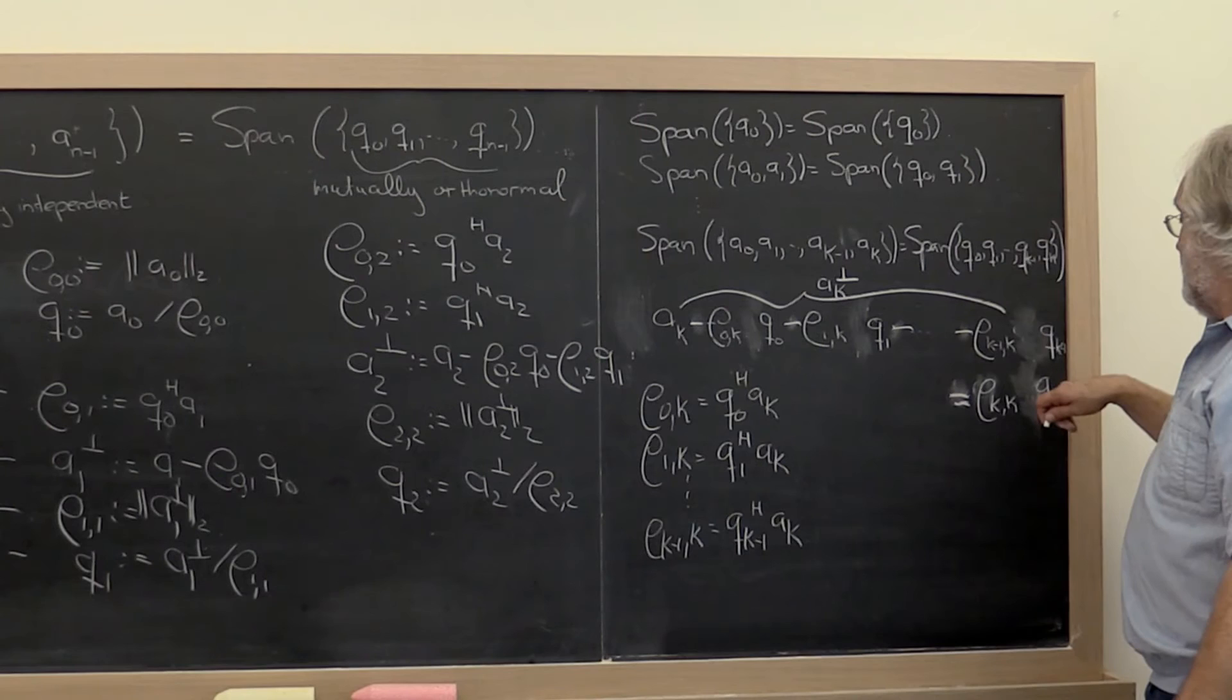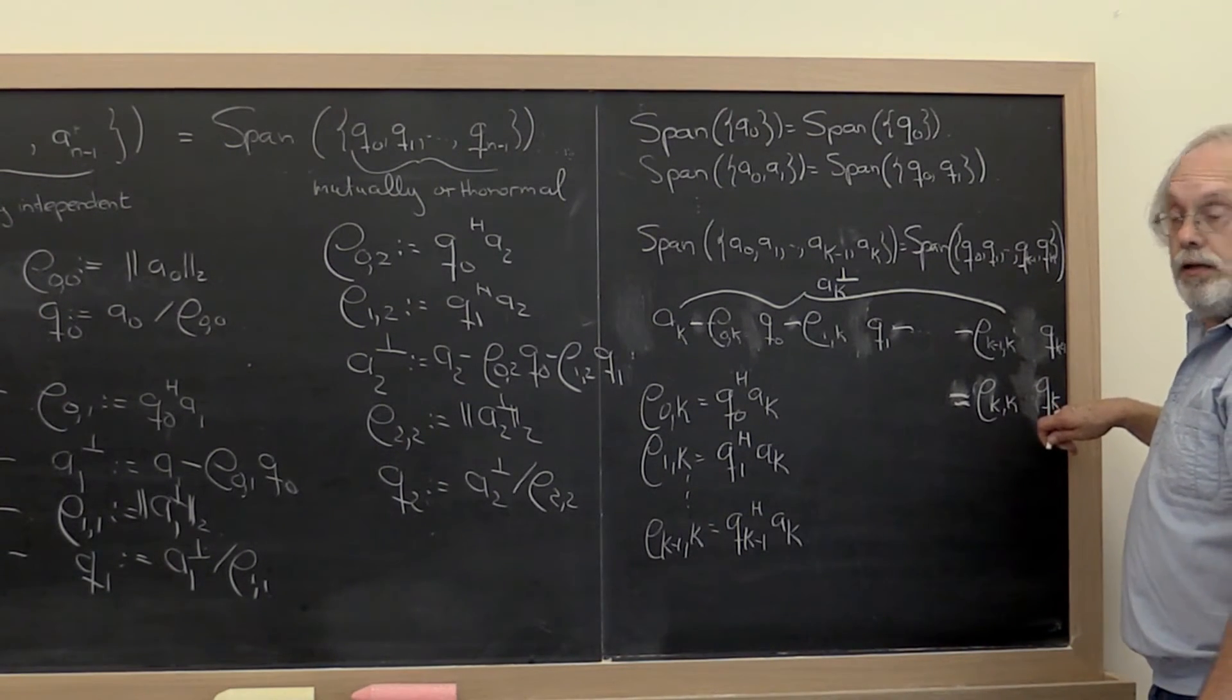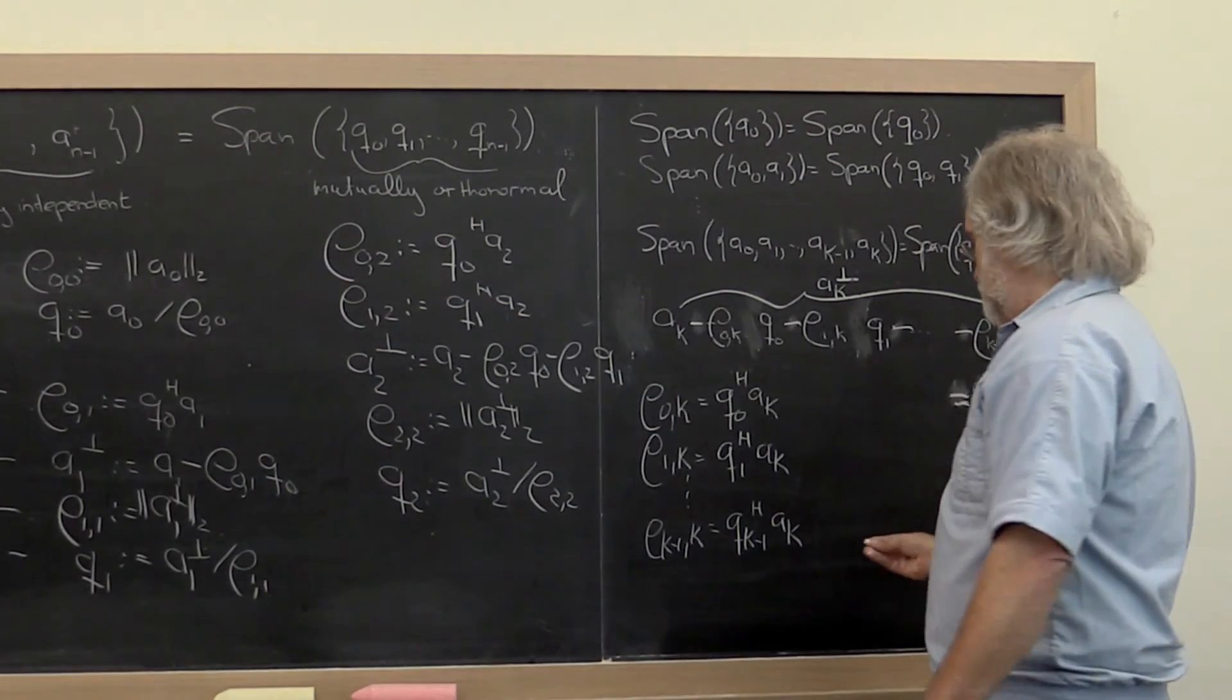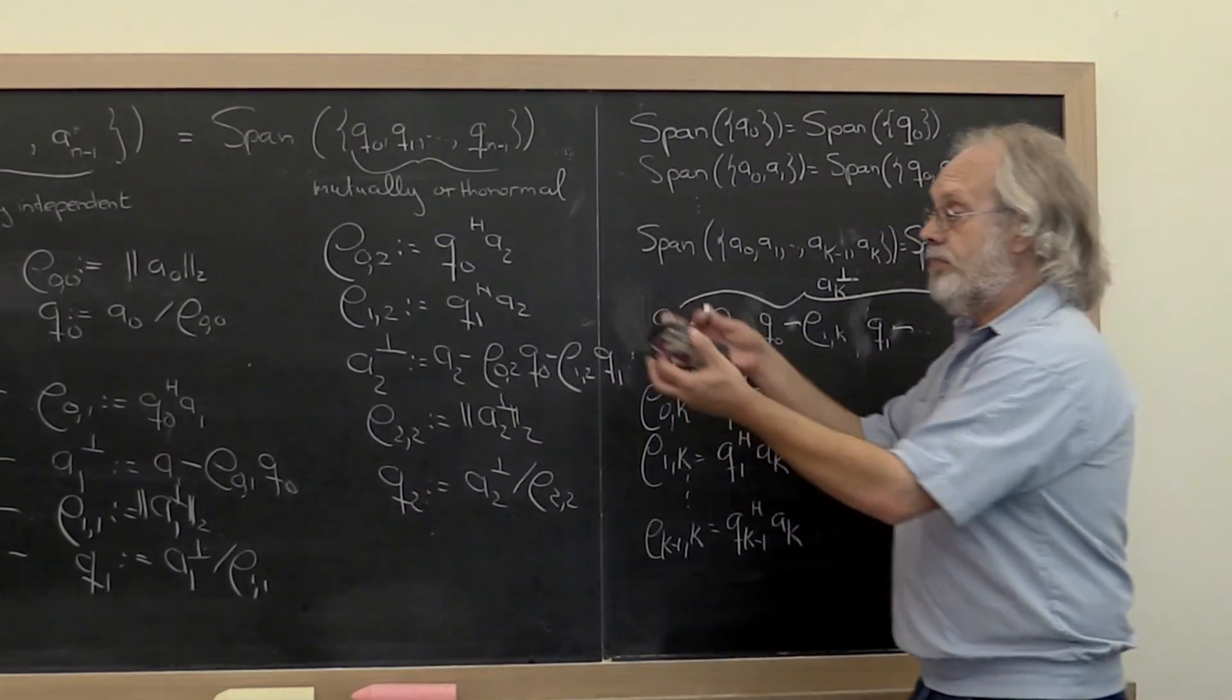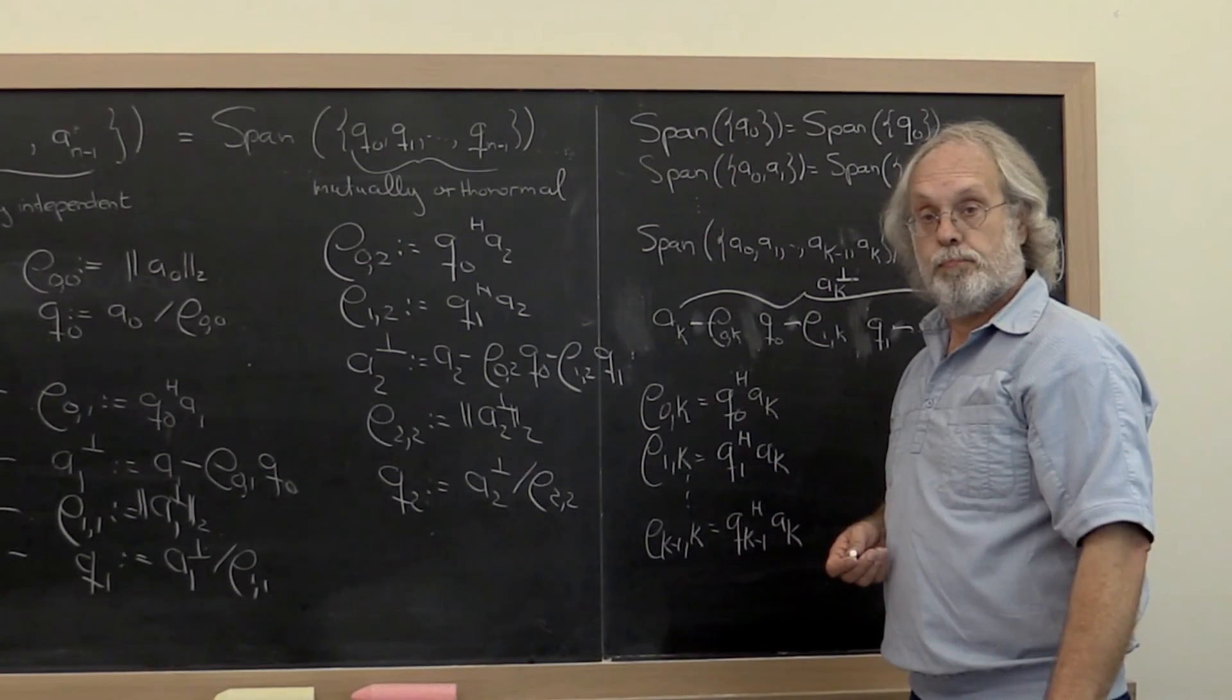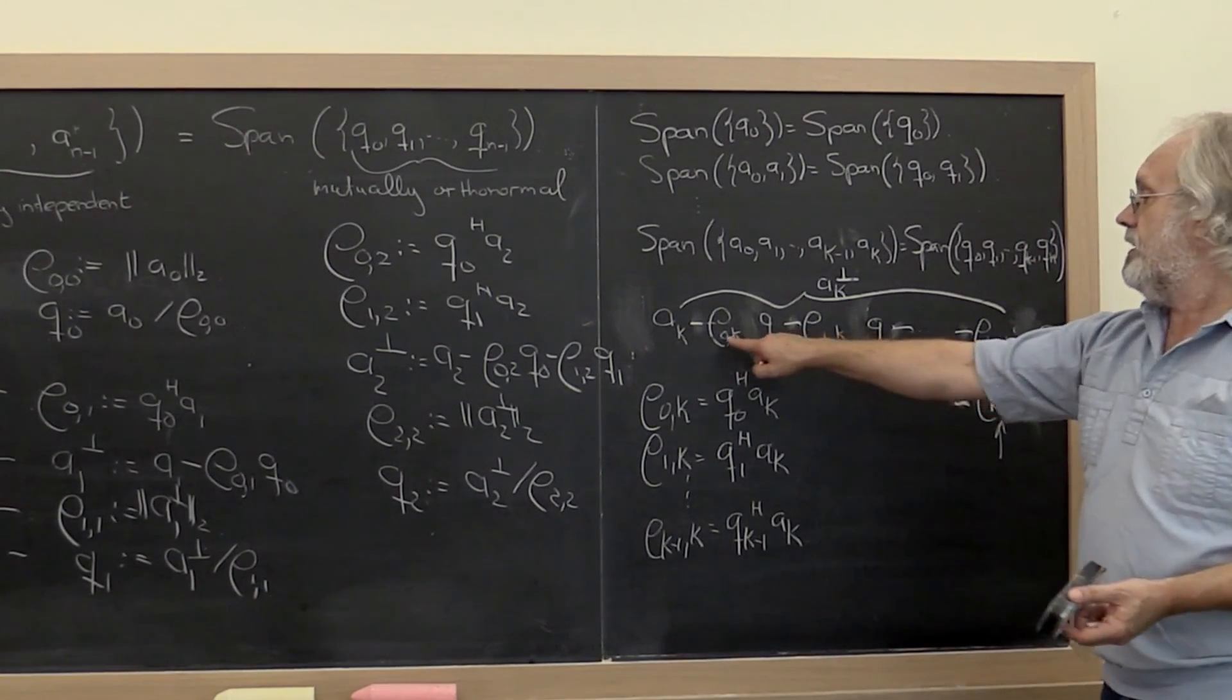After that, we know that Qk must lie in the same direction as Ak perpendicular, but it must be of length 1. And that tells us that we can choose rho kk to be the length of Ak perpendicular. So this is an alternative way of arriving at the exact same algorithm that we know as the Gram-Schmidt orthogonalization process or method. And what it really captures is the fact that Ak can be written as a linear combination of vectors Q0 through Qk.